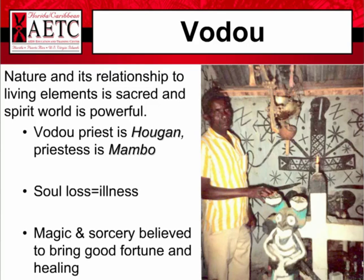Traditional voodoo practices include the use of magic and sorcery as part of their ceremonies. When dealing with Haitian patients, it's important to ask them how they would describe what is wrong with them. They might not admit to using voodoo practices in part due to the social stigma associated with voodoo in this country. SIDA is the word for AIDS in French, and HIV is referred to as VIH in French — French or a type of Creole French is the native language of Haiti. People may not always have the scientific names for an illness; they may call it SIDA rather than AIDS.